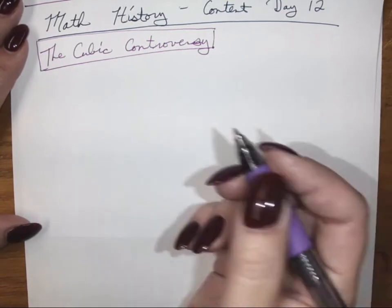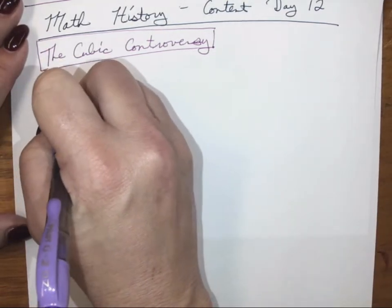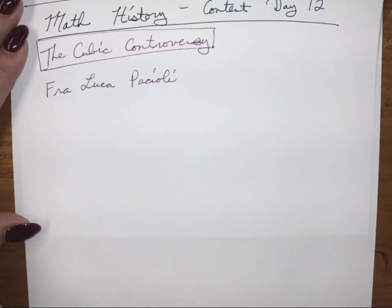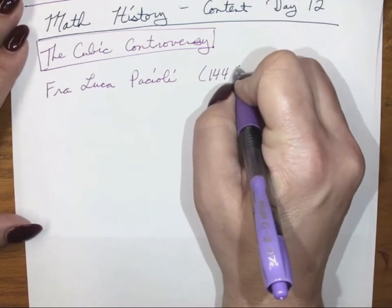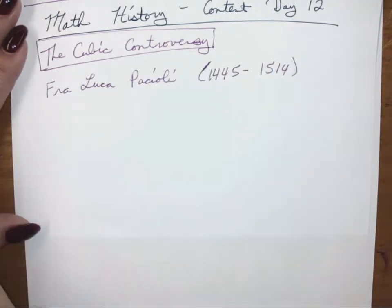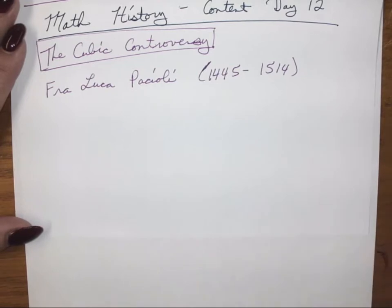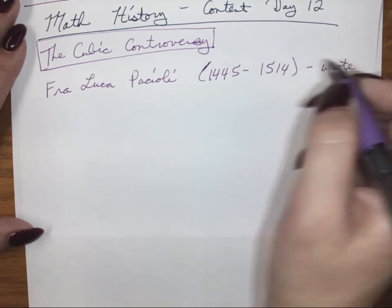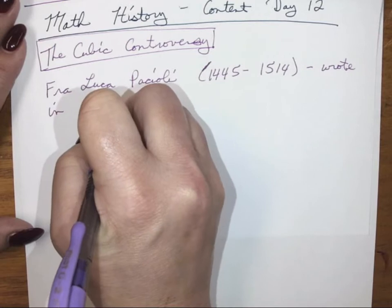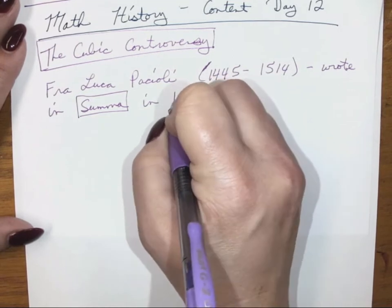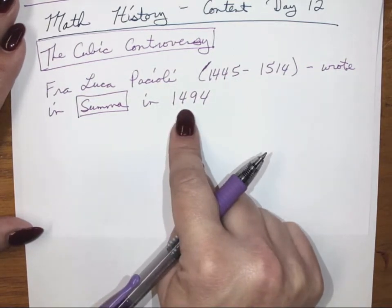There's a guy called Fra Luca Pacioli — P-A-C-I-O-L-I — his dates are 1445 to 1514. He worked on the cubic for quite a while and made a very bold statement in one of his writings. It was a book called Summa — that's the basic title — and he wrote this in 1494.